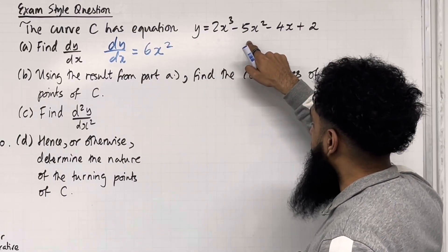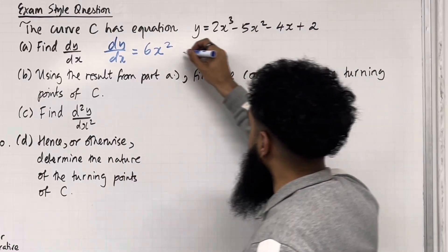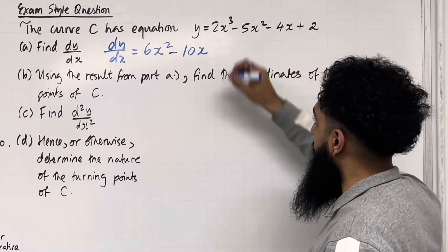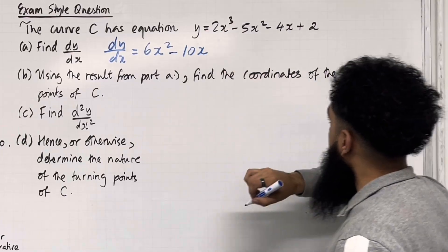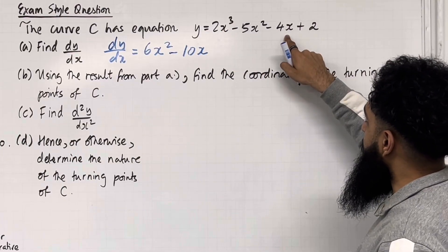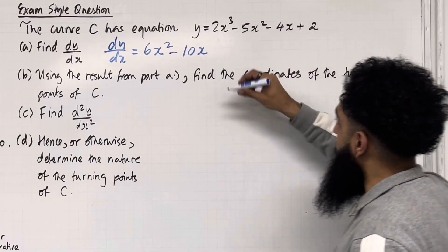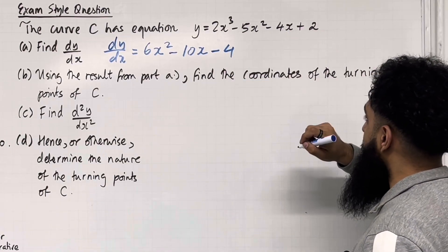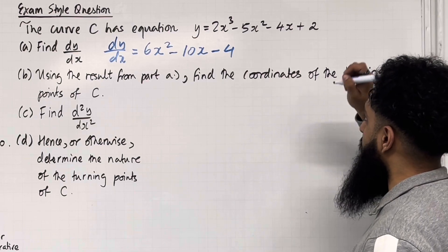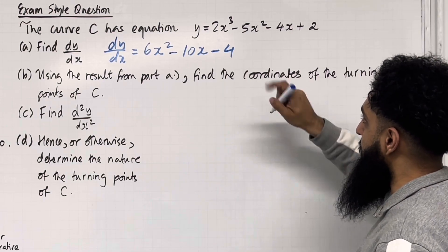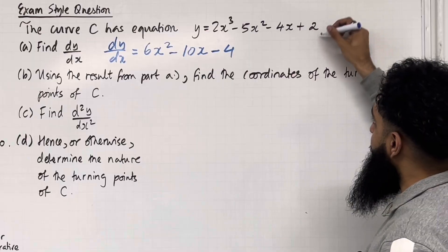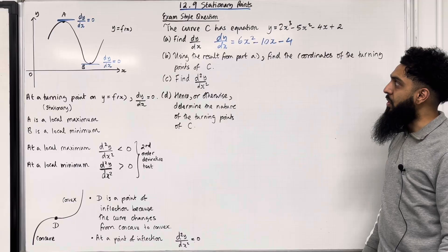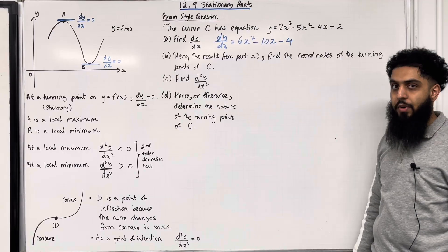The second term differentiates to −5 × 2 = −10, giving −10x. The third term differentiates to −4 × 1 = −4, and x to the power 1 − 1 = 0, so x⁰ = 1, giving −4. A constant differentiates to 0. So in Part A, dy/dx = 6x² − 10x − 4.